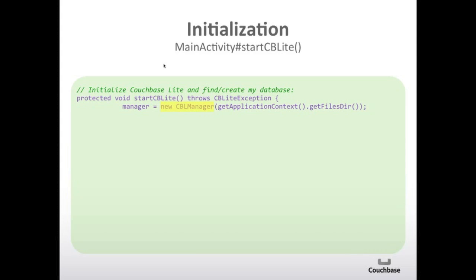This is how you initialize Couchbase Lite. You create a new CBLManager object and you pass it the directory where you want it to create your database. In this case, we're getting that directory by calling getApplicationContext(), which is an Android API call, and then getFilesDir() on top of that. If we wanted to put it in a subdirectory, we could add it at this point.